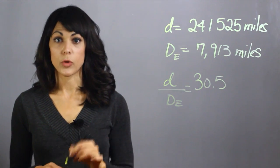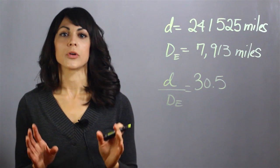That means that from the Earth to the Moon, we can fit 30.5 Earth diameters.